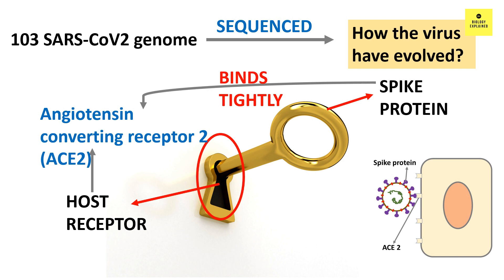Once the spike protein is tightly fit, the virus can fuse with the human lung cell and inject its RNA inside, which then, using the cell's machinery, replicates and produces its parts. Later, the virus particles assemble and come out of the human cell, ready to infect several other cells.